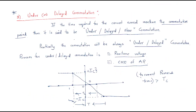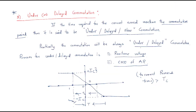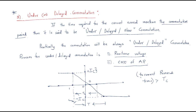We are discussing the reasons for delayed commutation. Generally we have three types of commutations: ideal commutation, over commutation, and under commutation or delayed commutation. The reasons for delayed commutation are: first, the reactance voltage; second, the cross-magnetizing effect of the armature reaction.